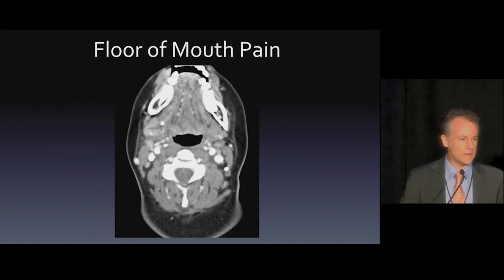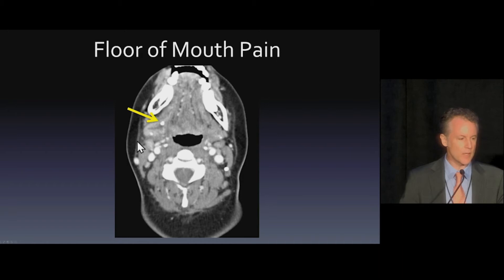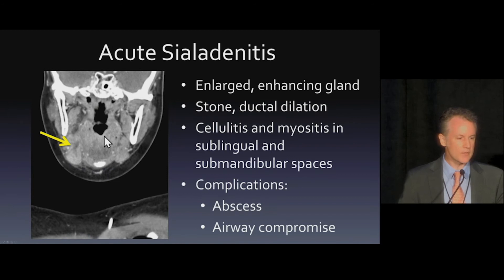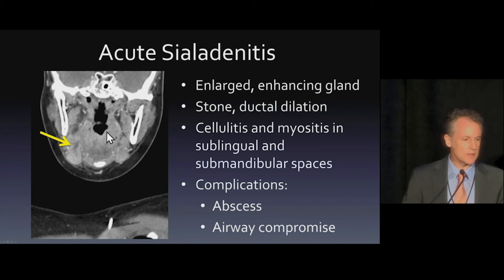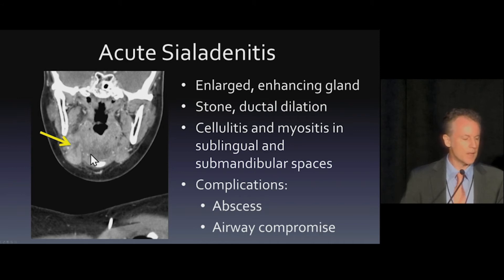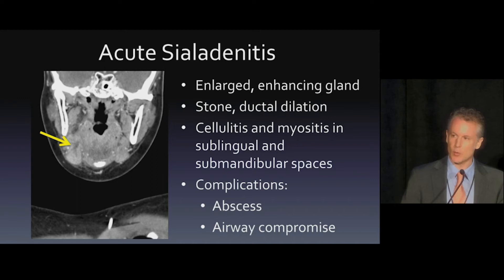Other causes of mouth pain. On CT neck we see a calcification with a submandibular gland next to it showing ductal enlargement, thickening of the platysma, and fat stranding — which I often use to pick up subtle head and neck abnormalities. The platysma is a nice little compass. This is acute sialoadenitis. We see an enlarged, enhancing gland, often a stone, sometimes ductal dilation, and adjacent cellulitis and myositis. The submandibular gland lies in the sublingual and submandibular space, so you get abnormalities throughout here. Complications are pretty rare but include abscess. Any time I see a head and neck abnormality, it's important to look at and comment on the airway to make sure you don't miss airway narrowing.